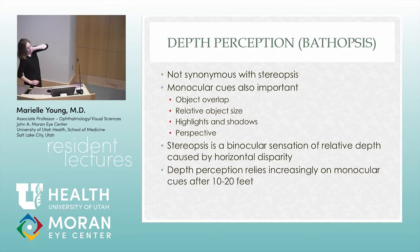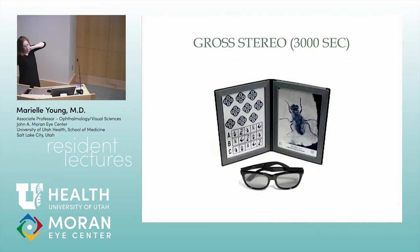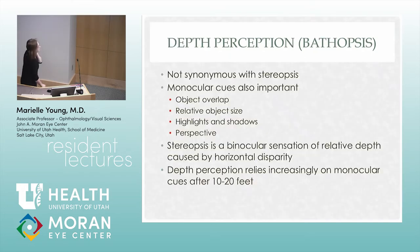Binocularity is what we're trying to achieve with strabismus surgery. Some studies suggest that if you don't operate to fix strabismus by around age three, you're never going to get stereopsis. Those studies are hard to interpret because you can't separate kids who develop strabismus from those who never had it. But this is what we're trying to achieve when we operate early — sometimes we get it and sometimes we don't.